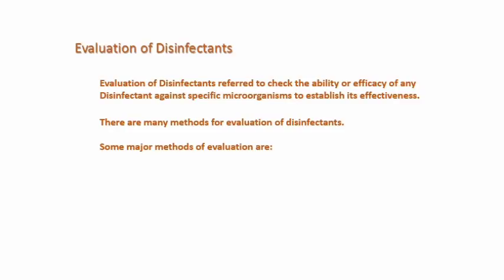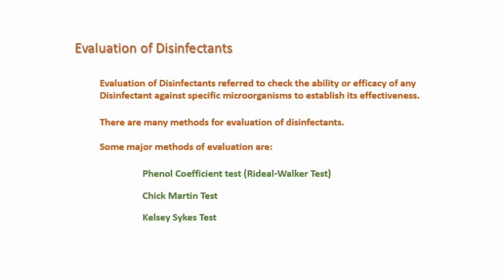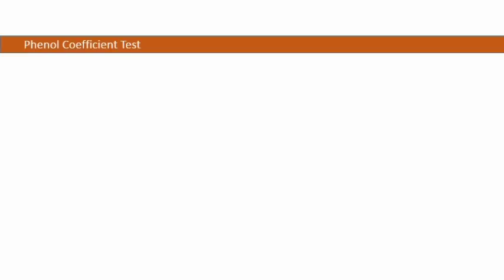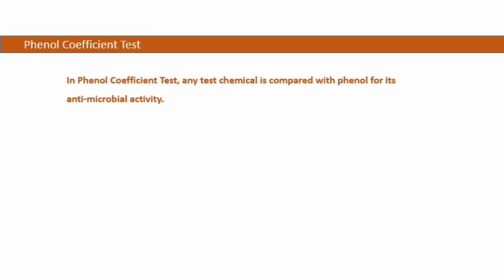Disinfectant ke evaluation ki teen major methods hain: phenol coefficient test ya jise Ridel Walker test bhi kaha jaata hai, Chick Martin test, aur Kelsey Sykes test. In teen methods ko hum detail mein samjhenge. Sabse pehle hum discuss karte hain phenol coefficient test ya Ridel Walker test. Is test mein kisi bhi disinfectant ki antimicrobial activity ko phenol ke comparison mein evaluate kiya jaata hai — phenol sabse pehle jo disinfectant hai.